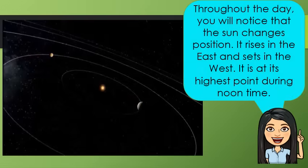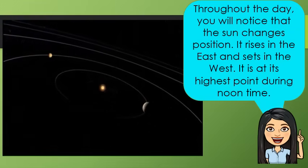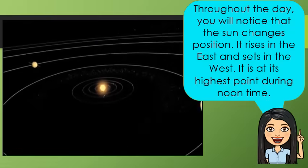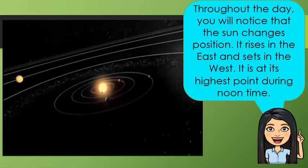Throughout the day, you will notice that the sun changes position. It rises in the east and sets in the west. It is at its highest point during noontime. In reality, it is not the sun that moves from east to west in one day. It is actually the Earth that moves around the sun. Though the sun is so far away, it only takes sunlight about eight minutes to reach the Earth because light travels so fast.